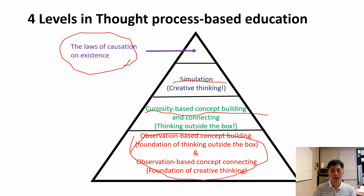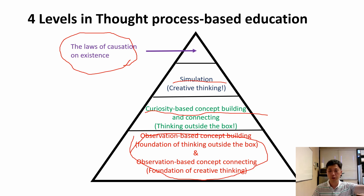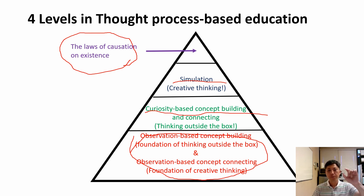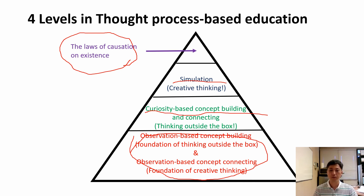One quick example for level four: consider the concept of high and low. Physically, a plane flying at high altitude — high and low exists because of gravity. If gravity didn't exist, everything would float and you couldn't have the concept of high and low. The law of causation and existence — this level of training simulates beyond such boundaries. You go beyond the constraints of existence itself.